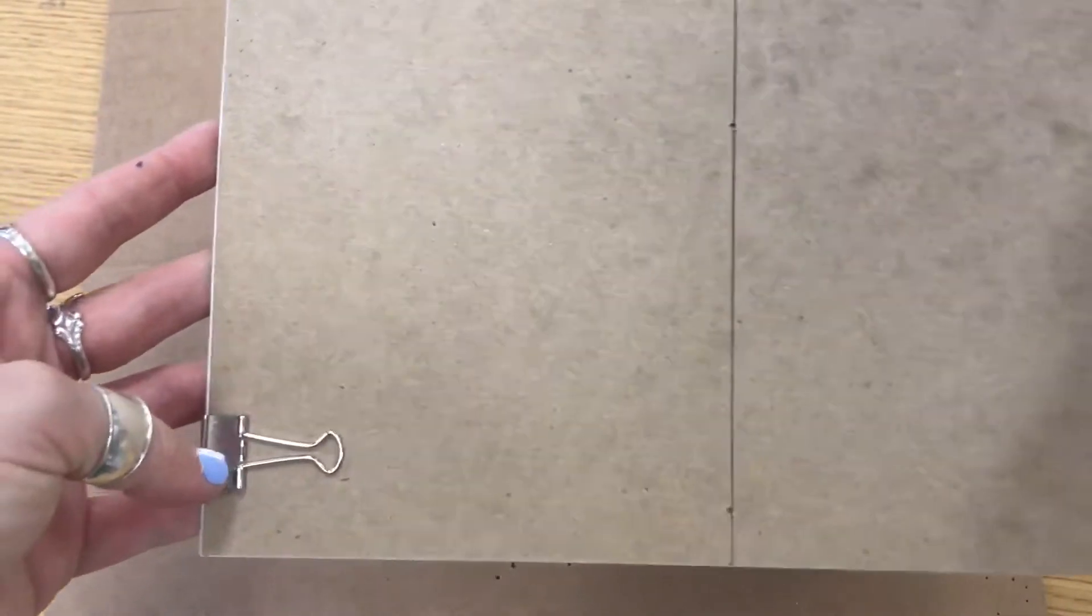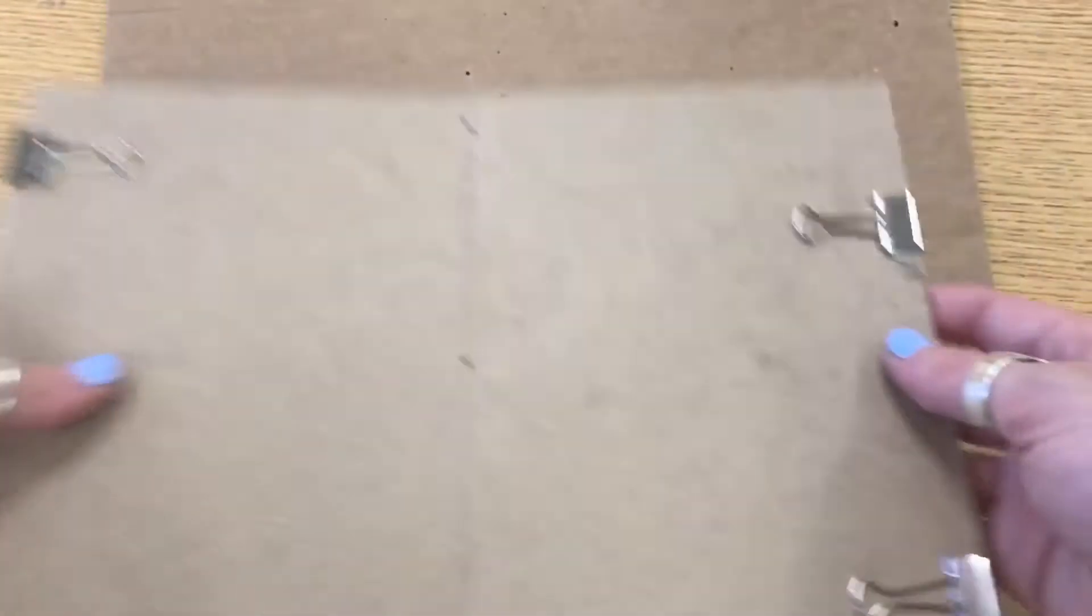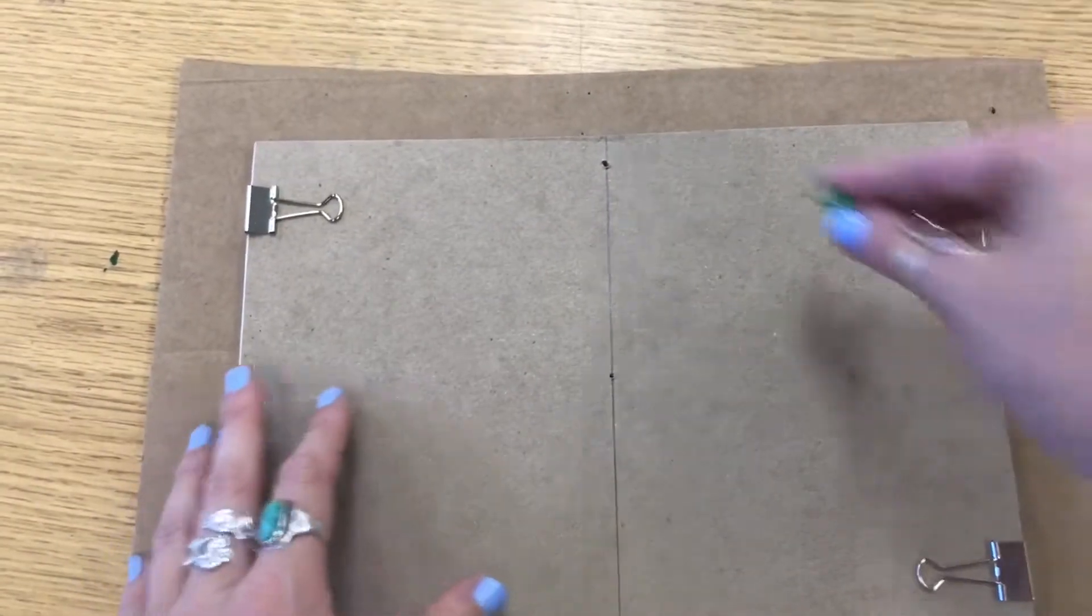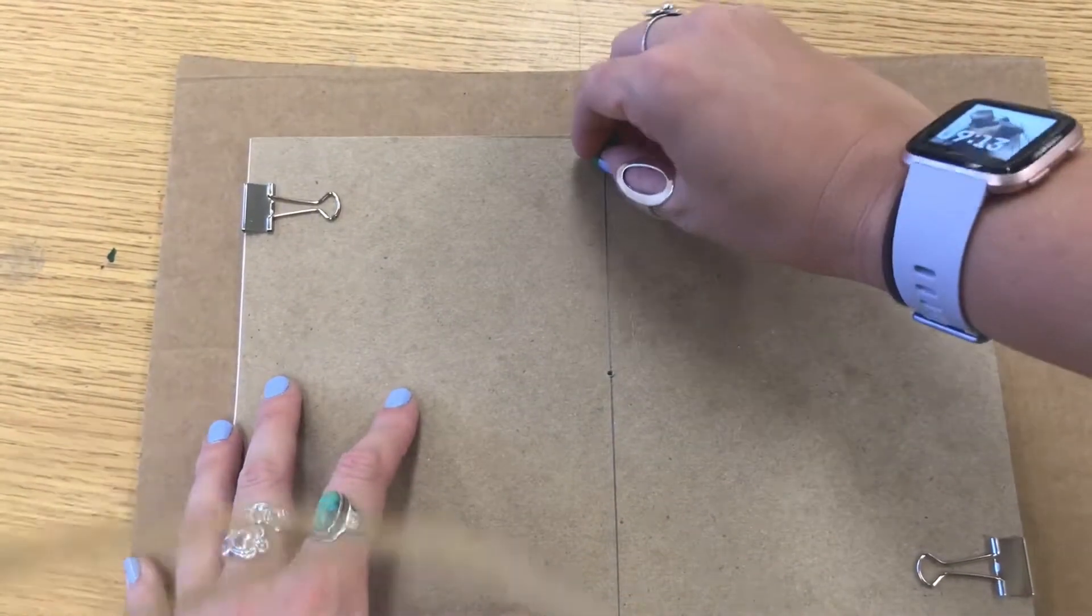Next, you're going to make sure your sketchbook is on top of a thicker piece of cardboard like this. We're going to get a tack and we're going to poke three holes into our sketchbook.